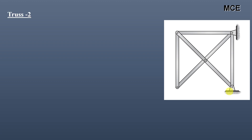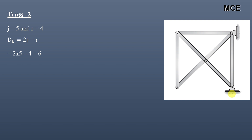For truss two, this truss has five joints and four reactions — two at this hinge support and two at this hinge support. The degree of kinematic indeterminacy dk = 6, meaning this truss has six degrees of freedom.